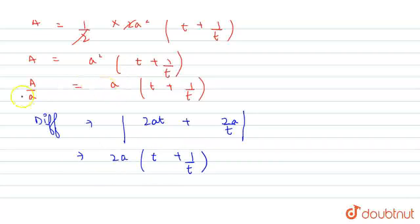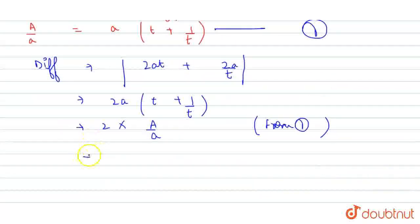In the above equation, we see A times (T + 1/T), its value is A/A. We put the value: 2 times A/A from equation 1. Our difference is 2A/A.